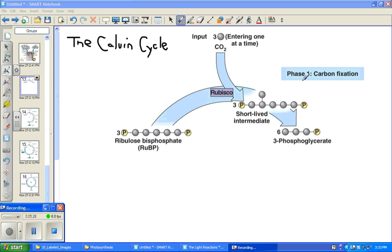Carbon fixation is when each CO2 molecule is incorporated by attaching it to the five carbon molecule called ribulose bisphosphate. This is done by an enzyme called rubisco. The product is unstable and immediately splits in two, forming two molecules of three-phosphoglycerate for each CO2 that's fixed.